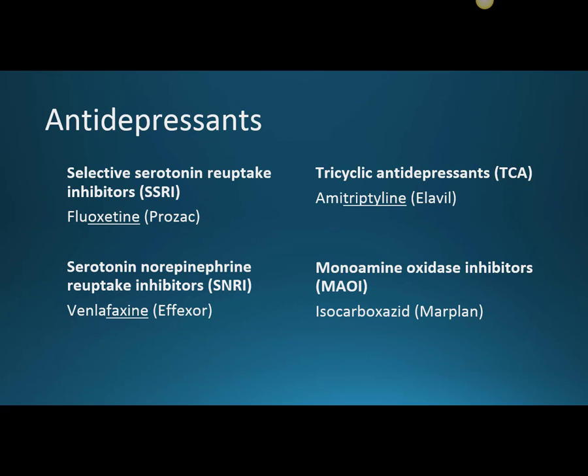Here is a list of the four classes we will review today. The first class is Selective Serotonin Reuptake Inhibitors, or SSRIs. The example we will be looking at today is fluoxetine, or Prozac. This drug works to inhibit the breakdown of serotonin within the neurons to therefore increase the level of serotonin in the brain.